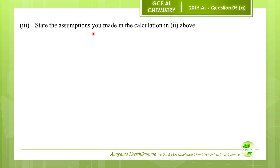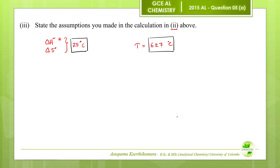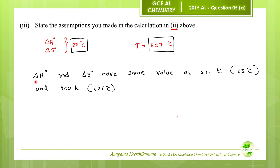Question number three: state the assumptions made in the calculation in question two. To get that answer, we used the standard enthalpy change and standard entropy change calculated at 25°C. The main assumption is that these two values do not change when the temperature increases to 627°C. In other words, ΔH° and ΔS° of the reaction are temperature-independent.